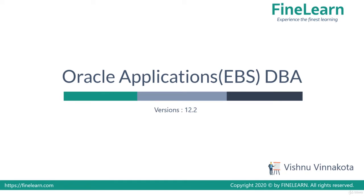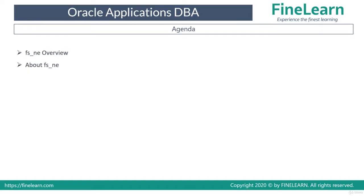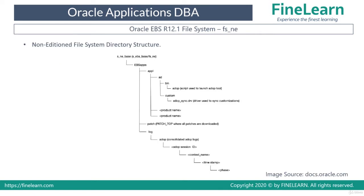In this lesson we'll be seeing about the Non-Edition File System, also called fs_ne. First we'll see the basic file system layout of fs_ne, then we'll see what are the important directories in fs_ne. Unlike other directories such as home or inst/top or EBS apps directories which are present in both the run file system and patch file system (fs1 and fs2), fs_ne is called the Non-Edition File System and there is only one directory in the base directory with the name fs_ne.